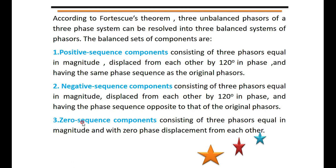The third component extracted from the unbalanced phasors is the zero sequence component. These are 3 phasors having equal magnitude, but the phase displacement between each other is zero — unlike the positive and negative sequence components which have 120 degrees of phase displacement. In the zero sequence component, all phasors have the same magnitude with zero phase displacement.